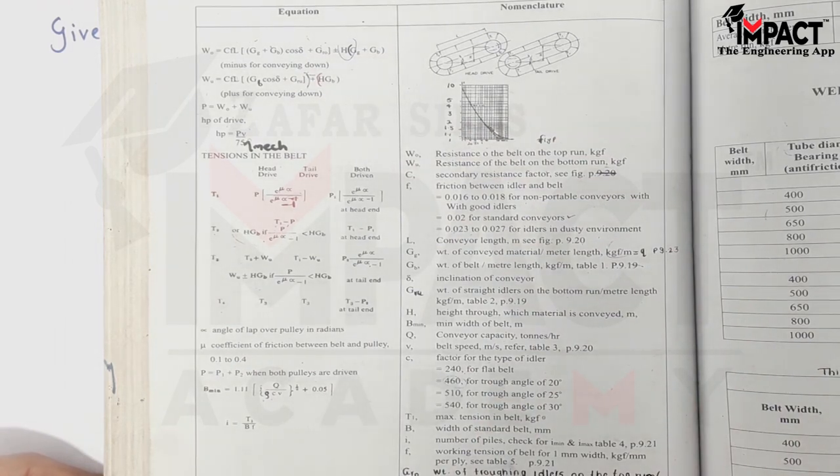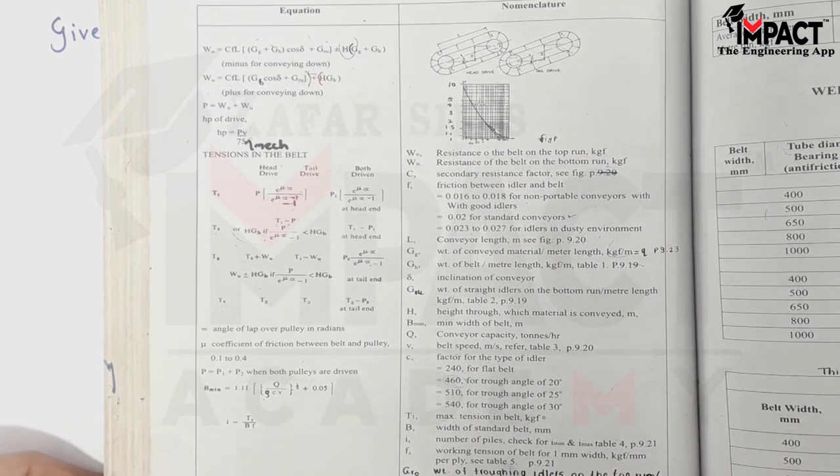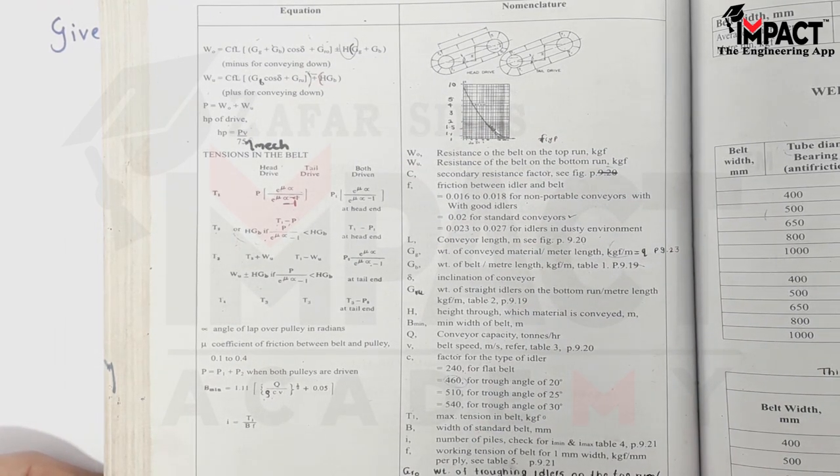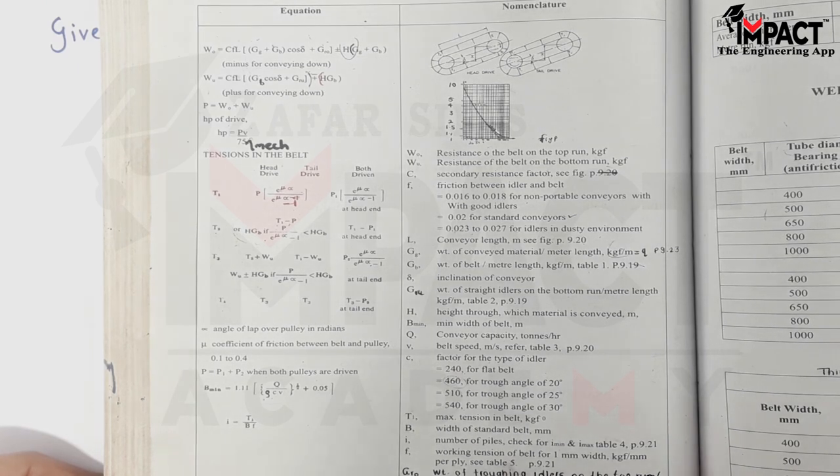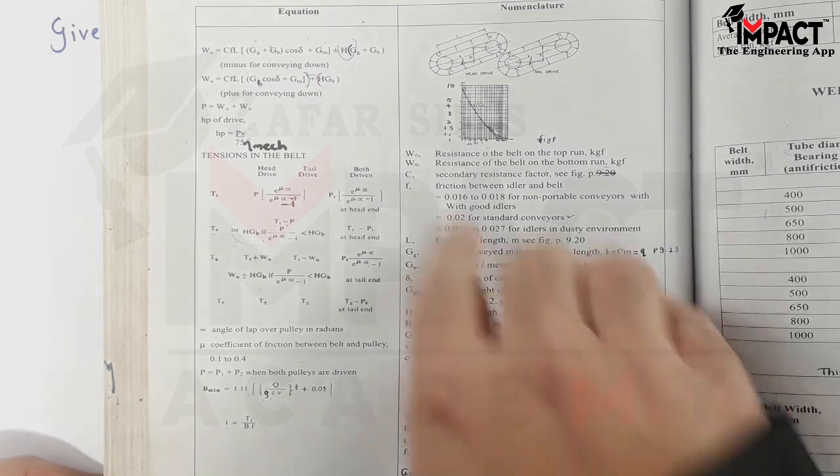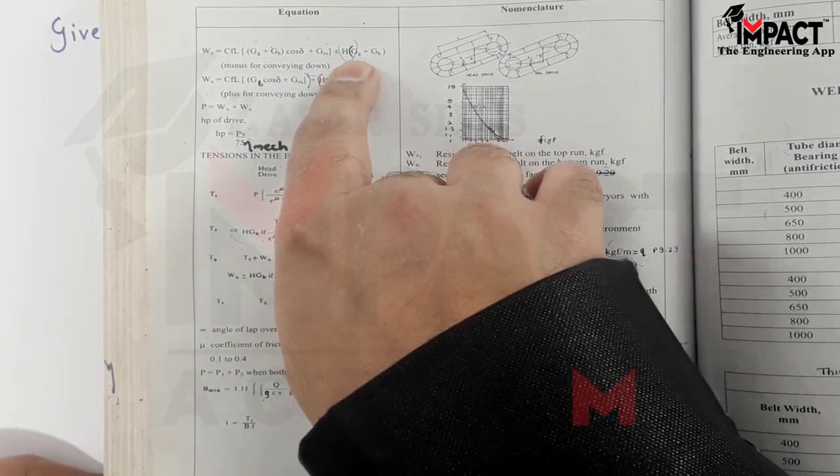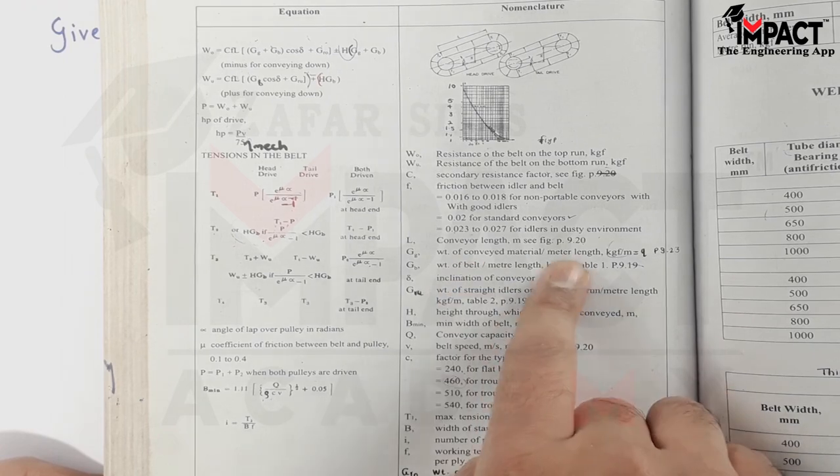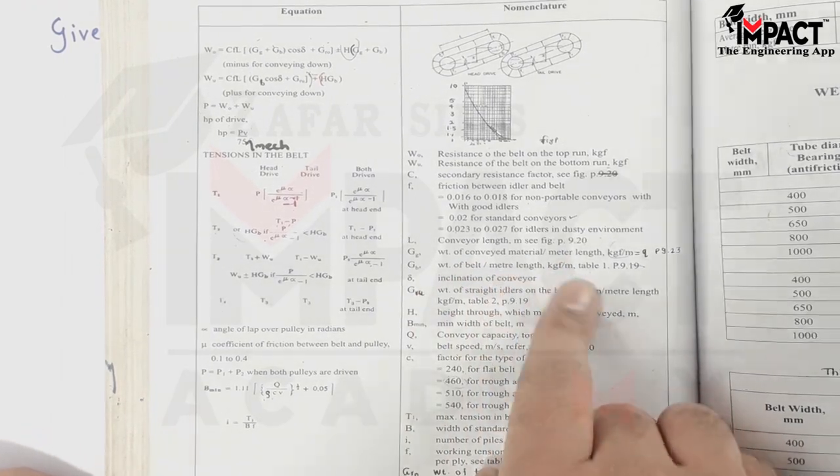Then G_RO is the weight of the troughing idlers on the top run in terms of kgf per meter. So it is per meter length. H is the conveying height, height through which the material is being conveyed. And then we know G suffix G and G suffix B, weight of conveyed material and weight of belt respectively.